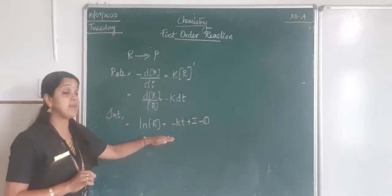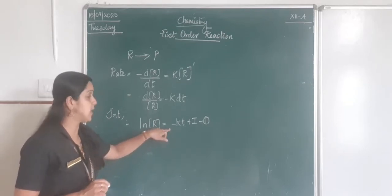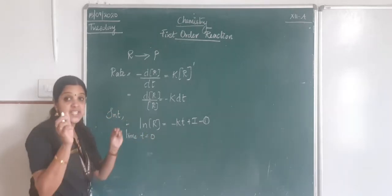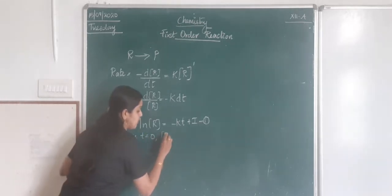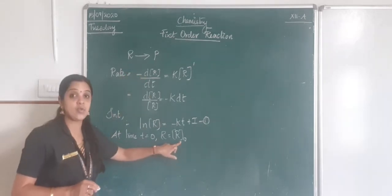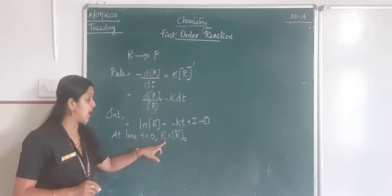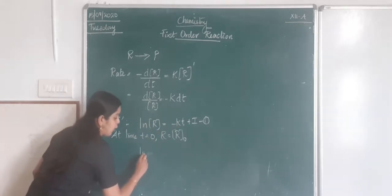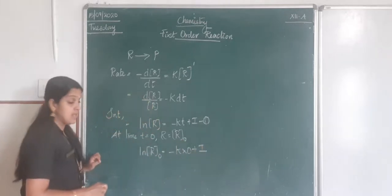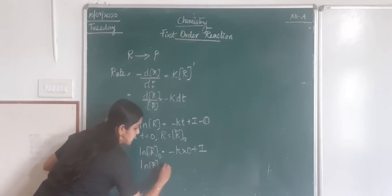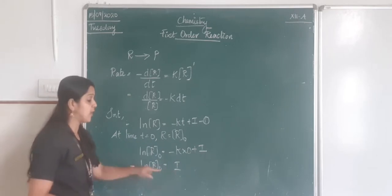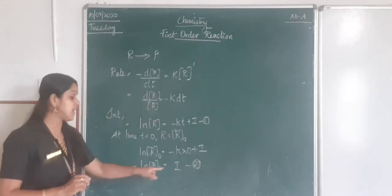At time t = 0, the initial concentration of the reactant R is R₀. Substituting into the first equation: ln R₀ = −k(0) + I, which gives ln R₀ = I. So the integration constant I equals ln R₀. This is equation 2.